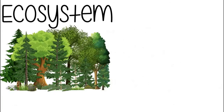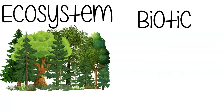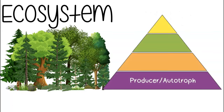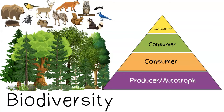Here we have a forest ecosystem. An ecosystem is made of both biotic and abiotic factors. The biotic factors shown only represent the producer population of the forest. Producers are the base of all ecosystems. If there's a lot of producers, we can support a lot of consumers. This ecosystem has a high level of biodiversity, or diversity of species.